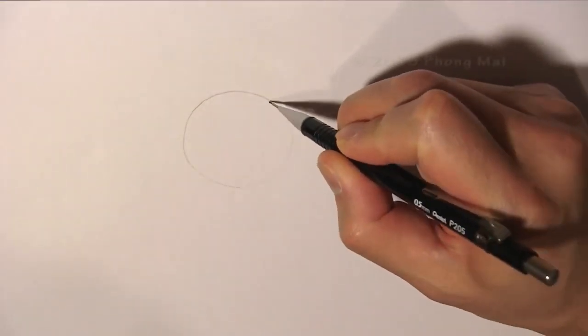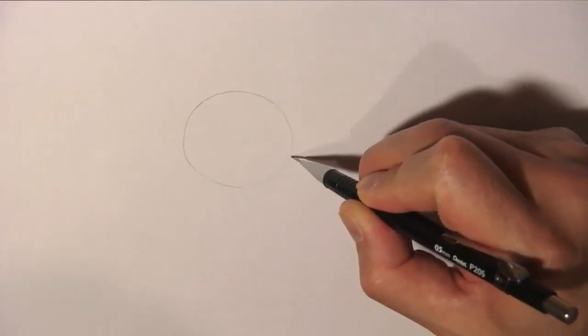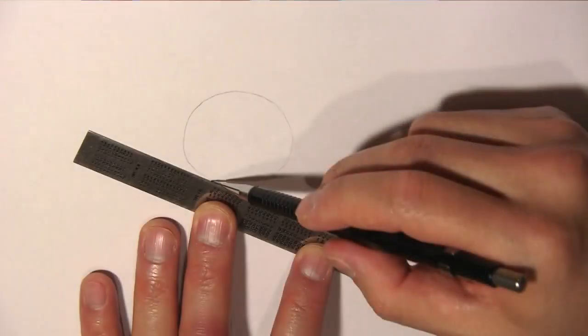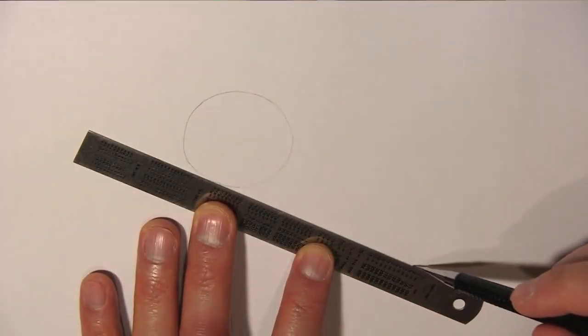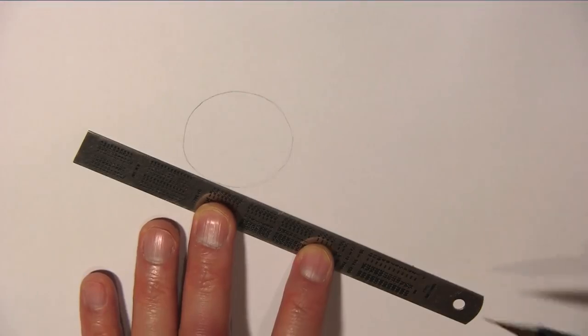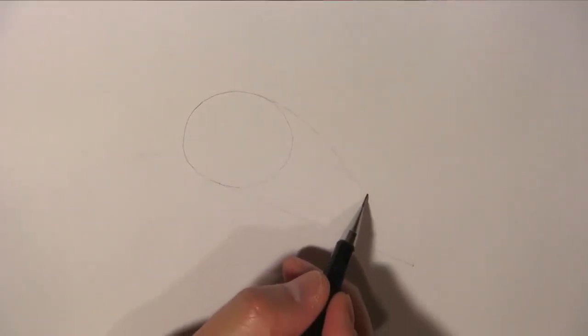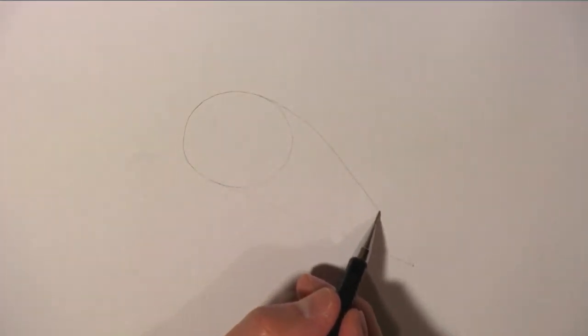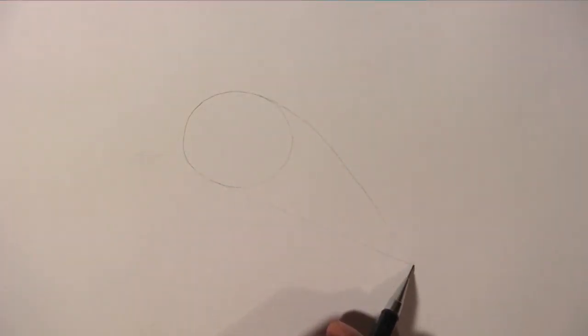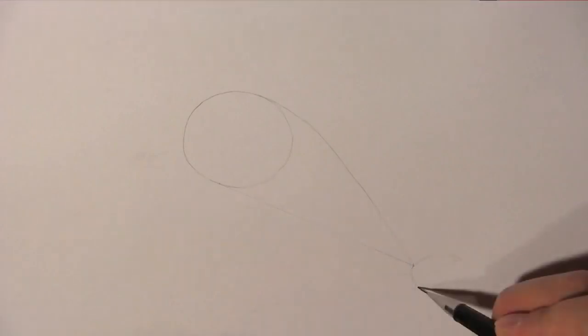First we draw a circle to help us draw the dolphin's head. Then we draw a straight line from under the circle to about there. And then draw a slightly curved line towards the top part of the circle. That looks somewhat like the dolphin's body. We will refine it later on.